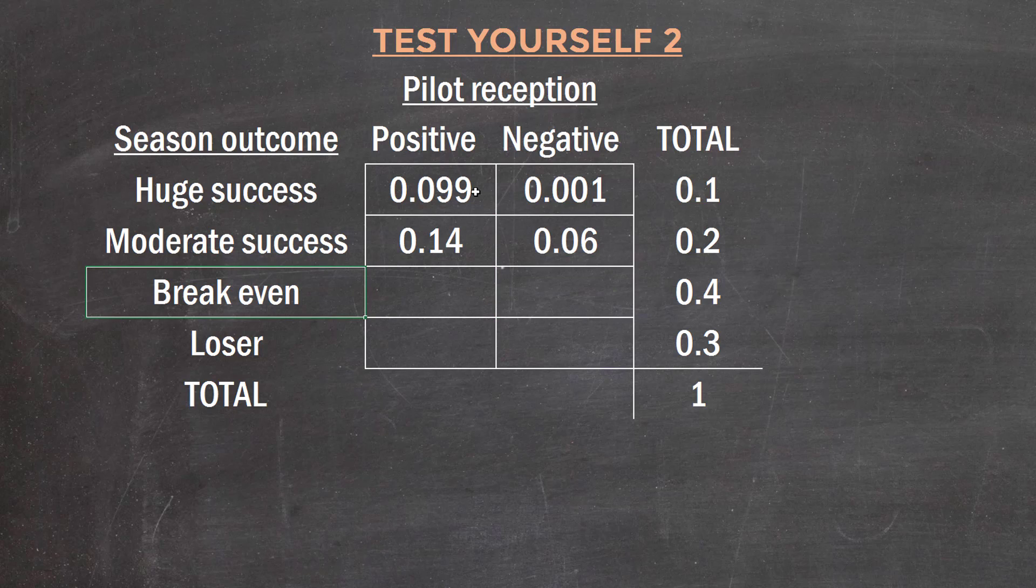40% of those that break even have positive pilot receptions, so that's 0.16, meaning that this must be 0.24, just making sure that adds up to a total of 0.4.